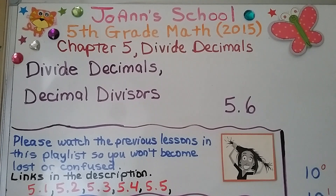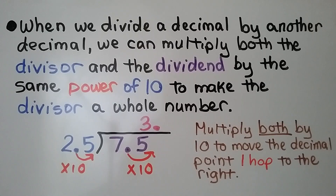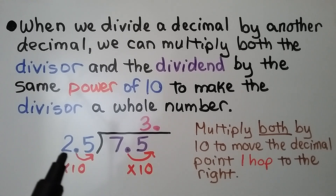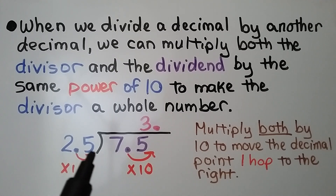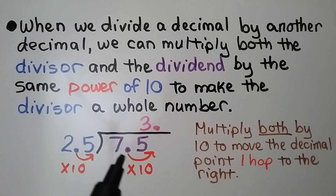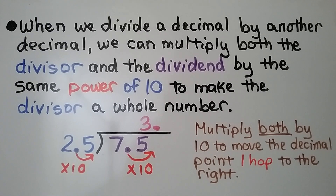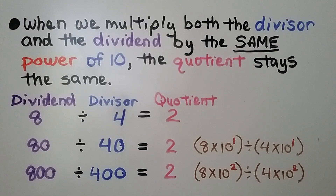Lesson 5.6: Divide Decimals with Decimal Divisors. When we divide a decimal by another decimal, we can multiply both the divisor and the dividend by the same power of 10 to make the divisor a whole number. We multiply 2 and 5 tenths times 10 to make it a 25, and multiply the dividend by the same power of 10 — times 10 — to make it a 75. We multiply both by 10 to move the decimal point one hop to the right.